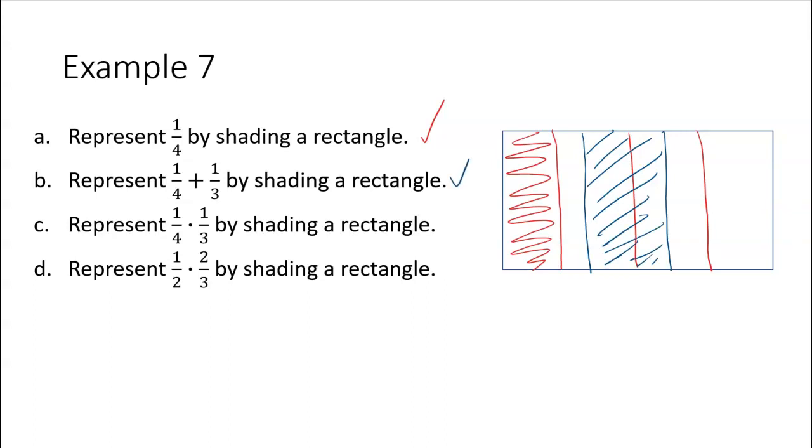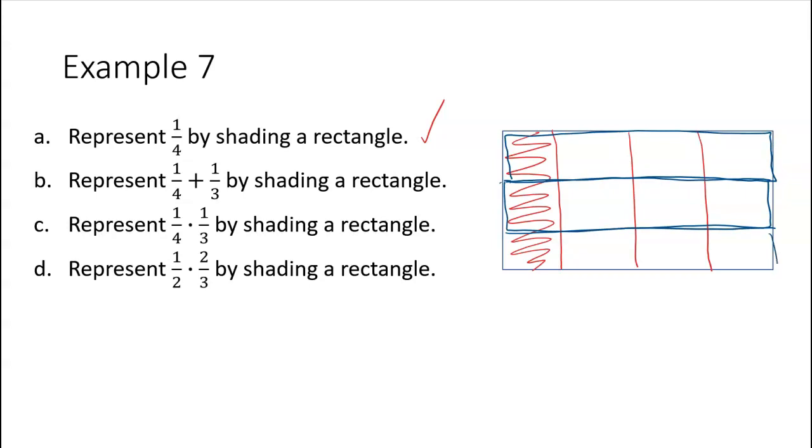And they're not next to each other, but we get the idea. All right, so what if I wanted to do 1 fourth times 1 third? Now, remember that when we multiply, we are looking at kind of that area model here. So 1 fourth times 1 third. Now, again, if you look at these horizontally, that's 1 third of this rectangle.